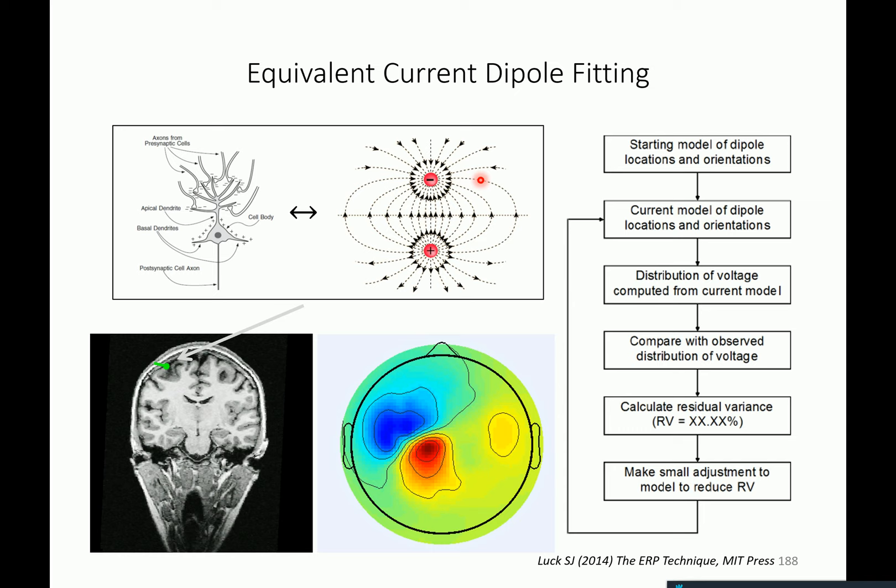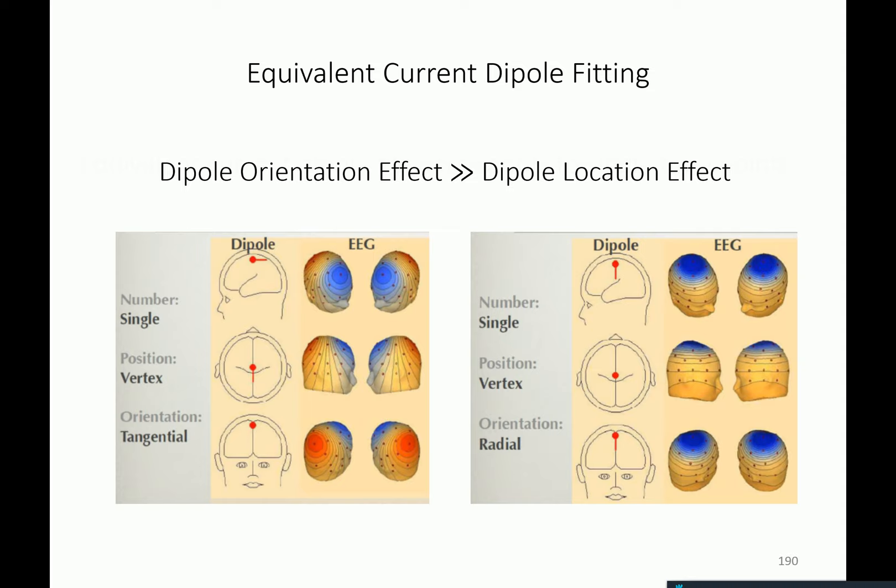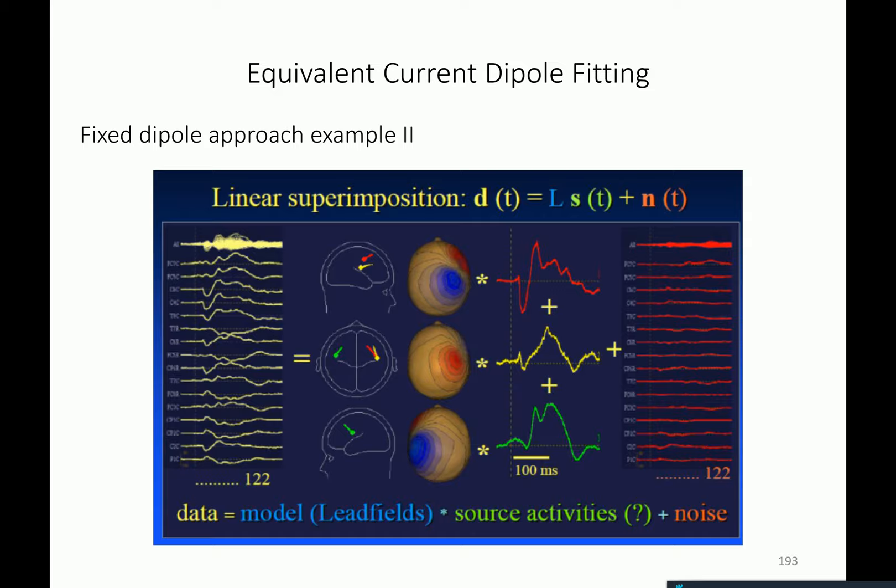What was left in terms of source space analysis was actually to talk about distributed source reconstruction. Are there questions left from yesterday that you would like to clarify?